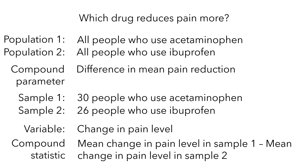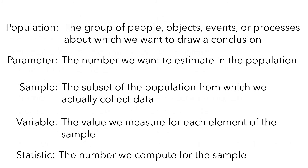Let's take a look back at what we've seen. We looked at the concepts of population, parameter, sample, variable, and statistic. We don't care about just the 25 babies or the 56 people with pain — we care about all babies and all people with pain. In other words, our goal is to determine the value of the parameter in the population. Since we can rarely survey the entire population, we use the sample and statistic to make an estimate. And the goal of inferential statistics is about developing techniques to understand how precisely we can make that estimation.